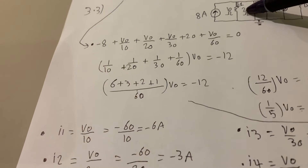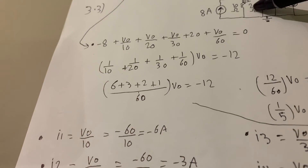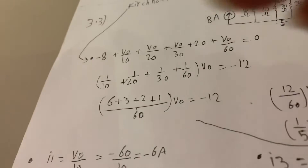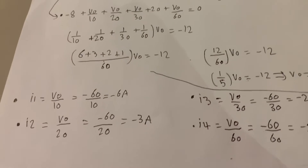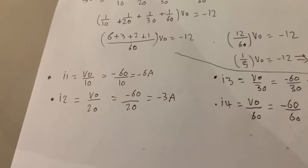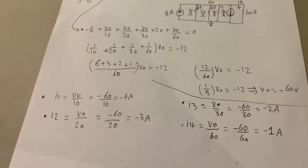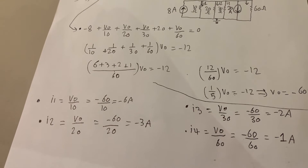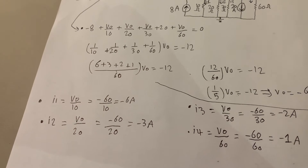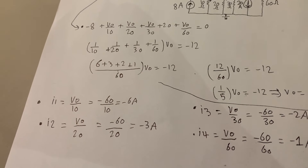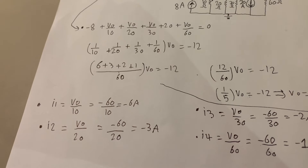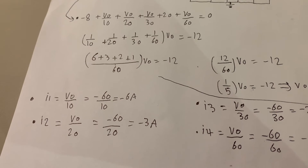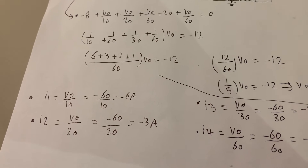For I1, it will be V0 over 10, which is equal to negative 60 over 10, which is negative 6 amperes. For I2, it is equal to V0 over 20; the second node voltage is 0, so we have V0 minus 0 over 20, and we discard the zero.